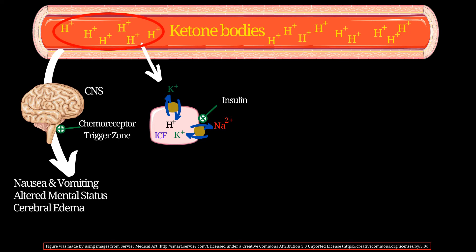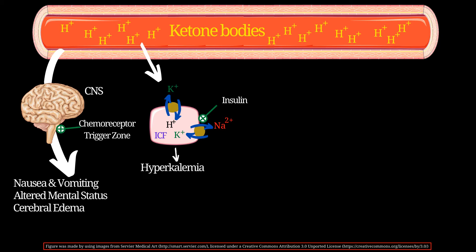Since ketone bodies produce a lot of protons, extracellular fluid becomes concentrated with protons. There is a membrane channel called the hydrogen-potassium channel present in many cells of the body. This channel takes hydrogen ions — present in higher quantities in the extracellular fluid — and exchanges them with potassium ions inside the cells. This increases potassium ion concentration in the extracellular fluid, causing hyperkalemia.